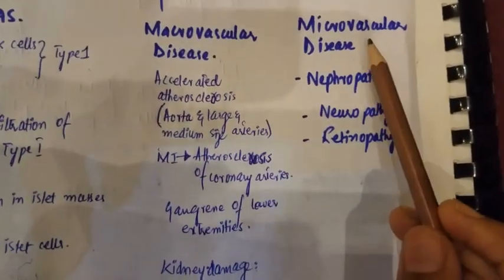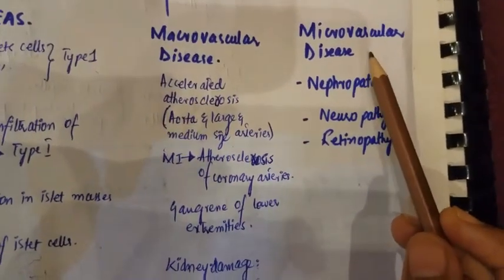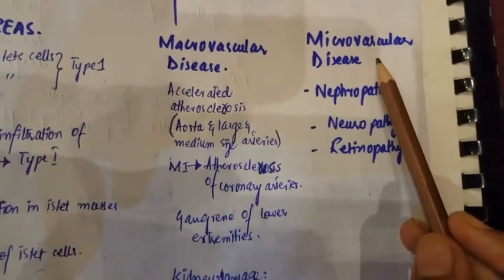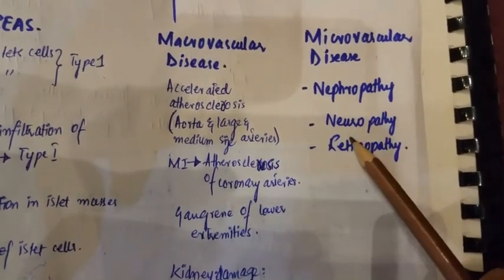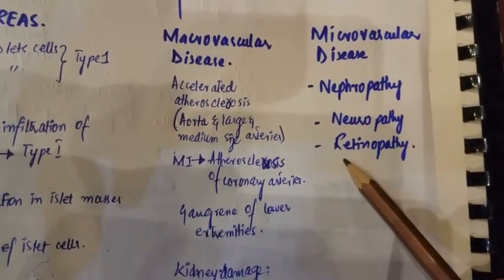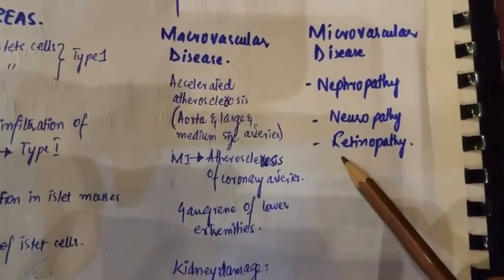What happens in microvascular disease? Due to microvascular disease, nephropathy, neuropathy, and retinopathy occur.